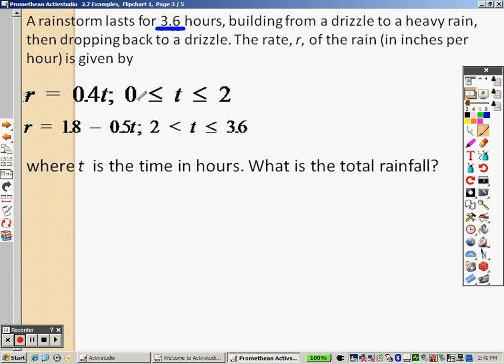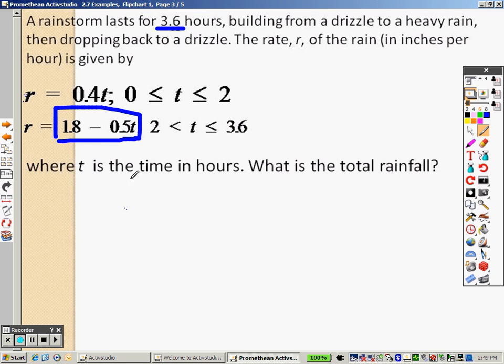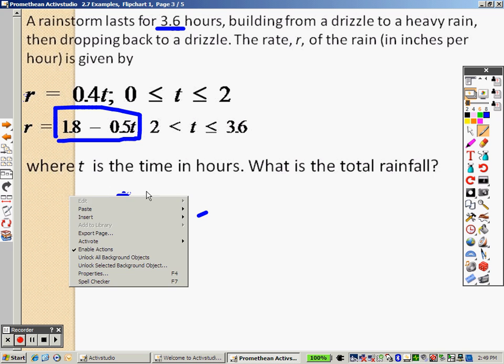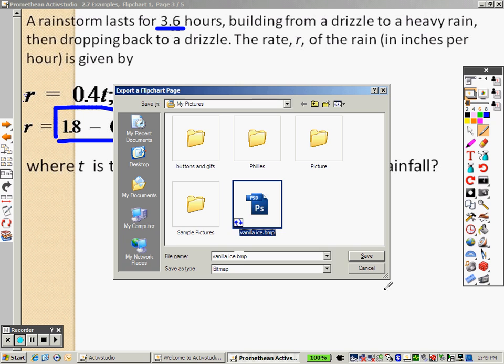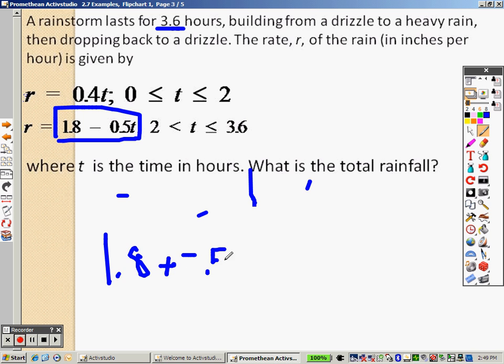So what we're saying is if the rain lasted in between 0 and 2 hours, I plug it into this equation. If it lasts between 2 and 3.6, you plug it into this one. This is 3.6, meaning I plug it into this equation down here because 3.6 is in this zone. So that means when I plug this in, it will be 1.8 times negative 0.5, and I plug in a 3.6 right in there.